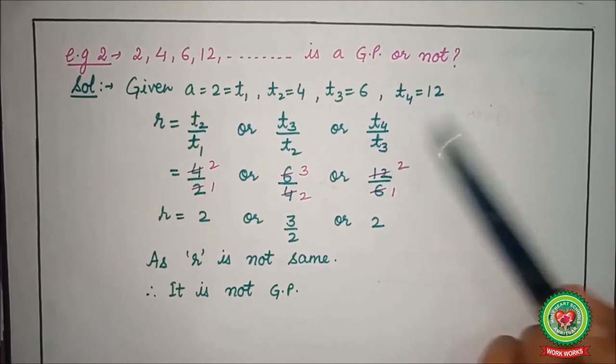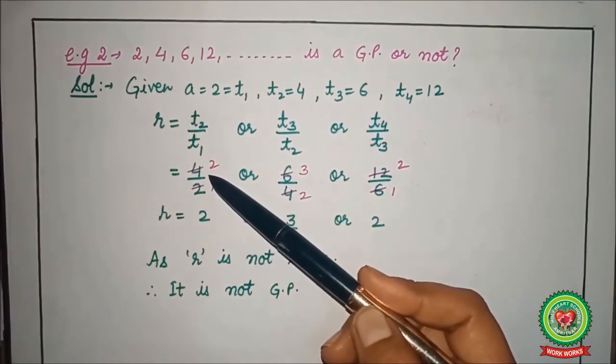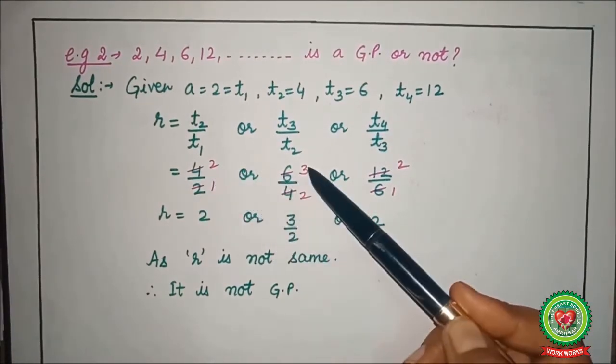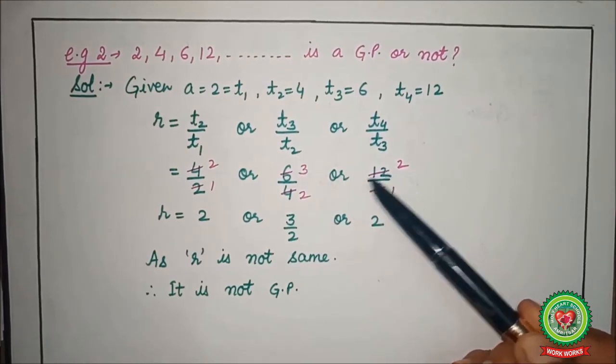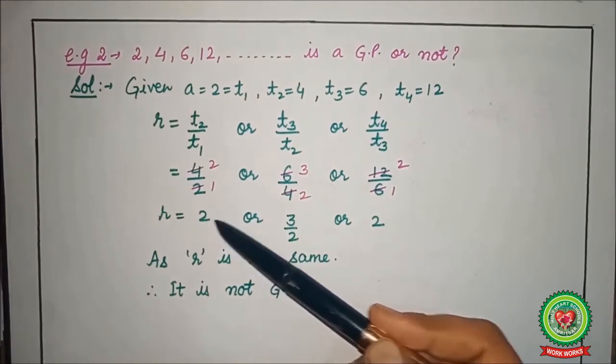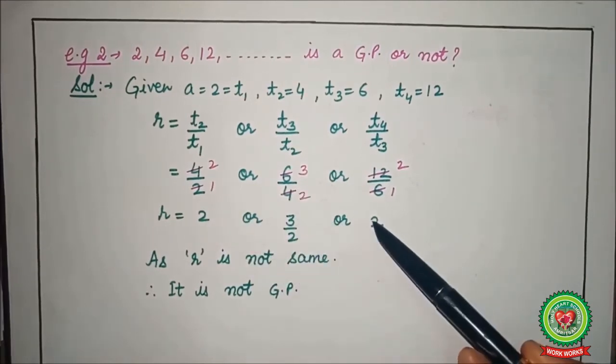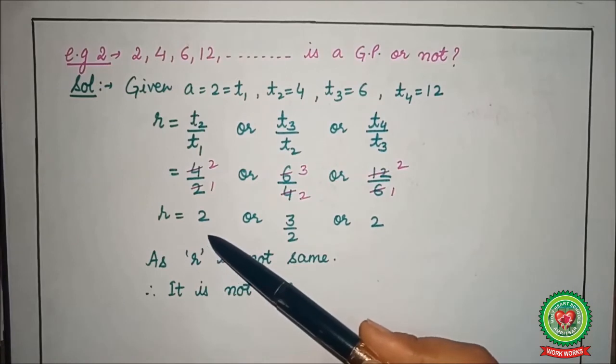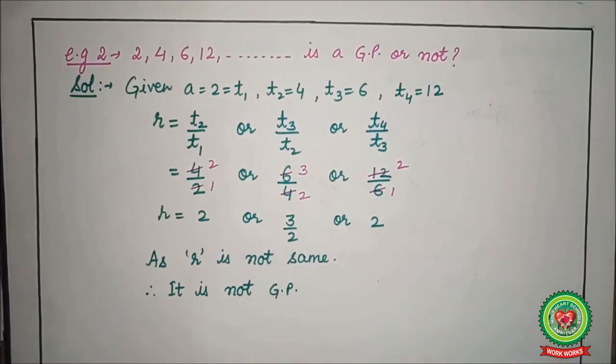Put the values, we get 4 upon 2, 6 upon 4, 12 upon 6. After cutting we are getting 3 values, that is 2 here, 3 by 2, and 2 here. The value of r is not same in all the cases, so it is not a GP. So the necessary condition for a series to be a GP is their common ratio must be same.